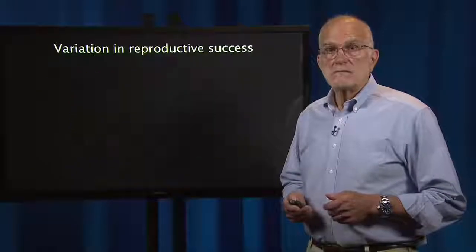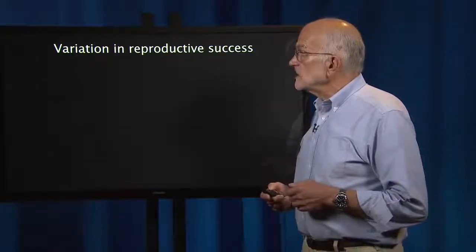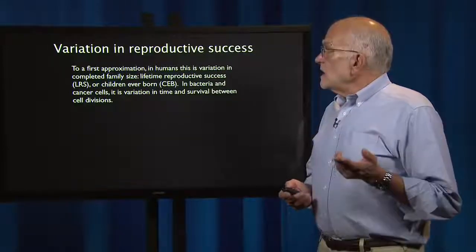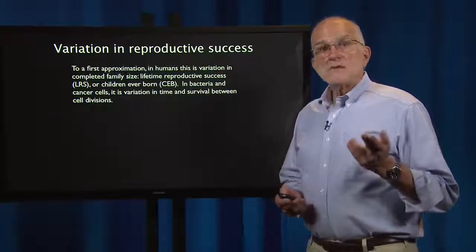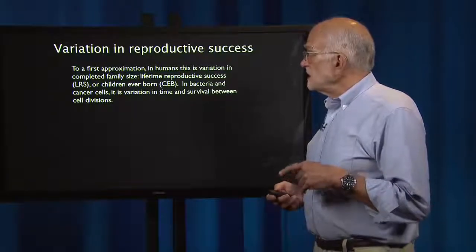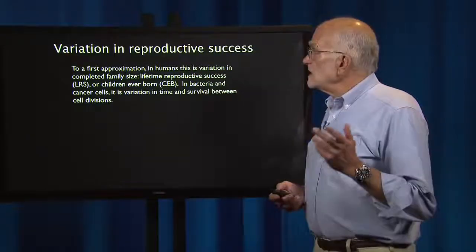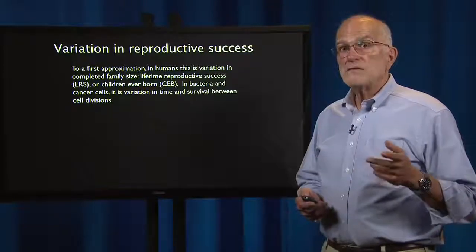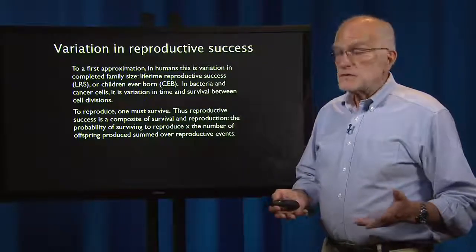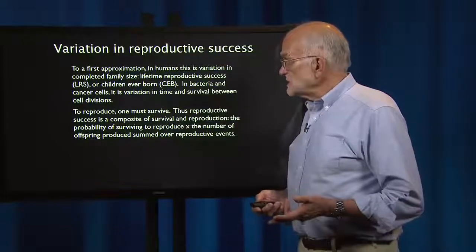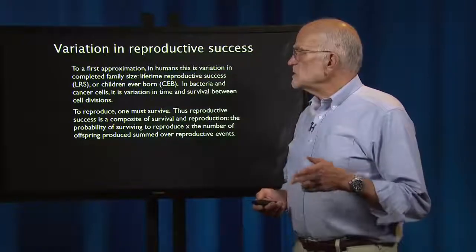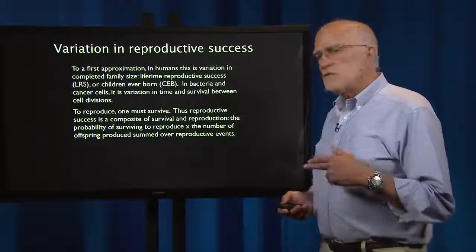Let's unpack them. First, variation in reproductive success. In humans, to a first approximation, this is variation in completed family size — lifetime reproductive success, abbreviated LRS, or children ever born, abbreviated CEB. In bacteria and cancer cells, it's variation in time and survival between cell divisions. To reproduce, one must survive, of course. Reproductive success is a composite of survival and reproduction: the probability of surviving to reproduce times the number of offspring produced, summed over the reproductive period.